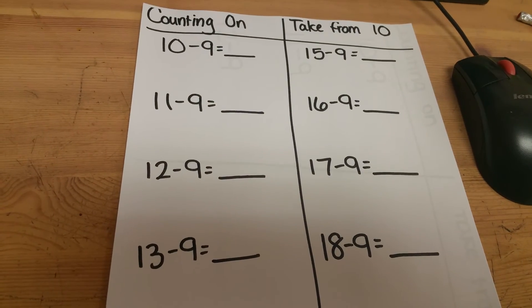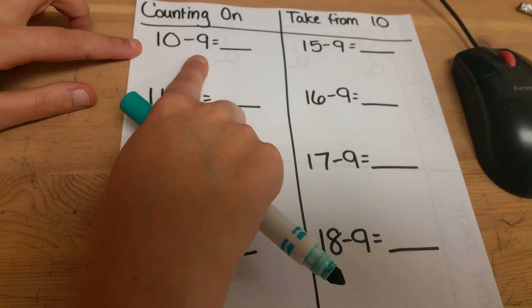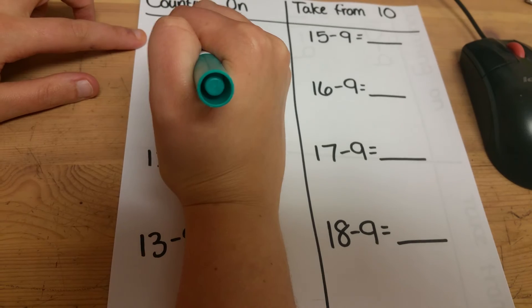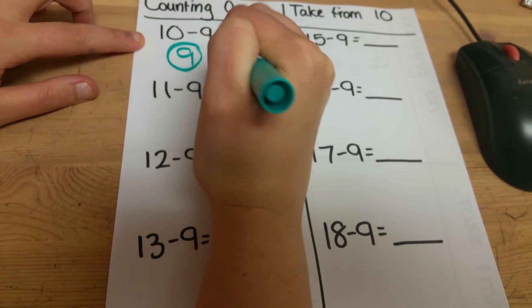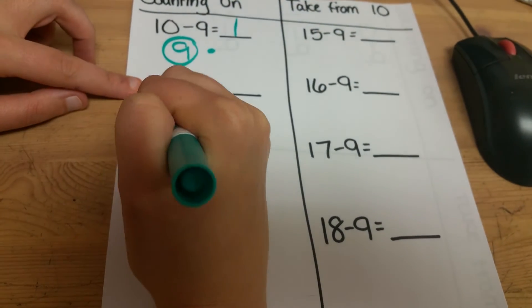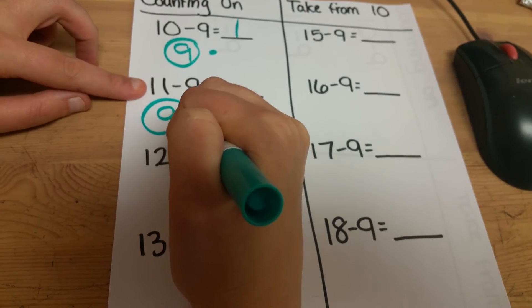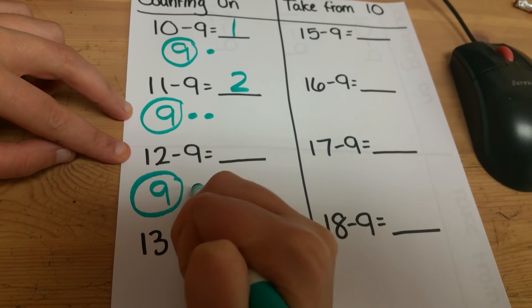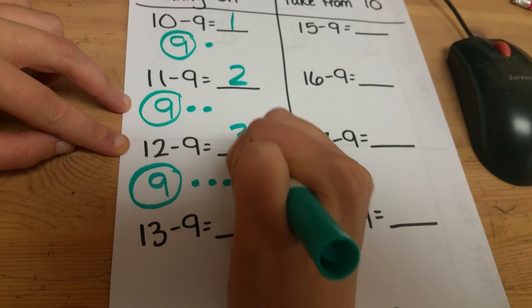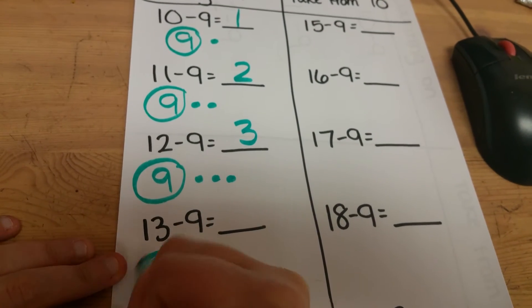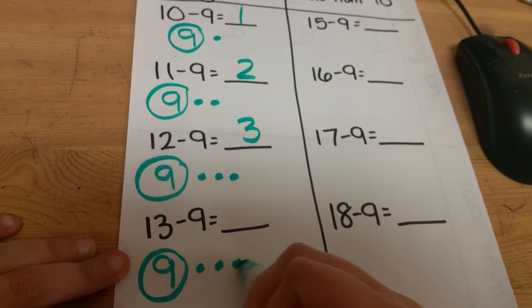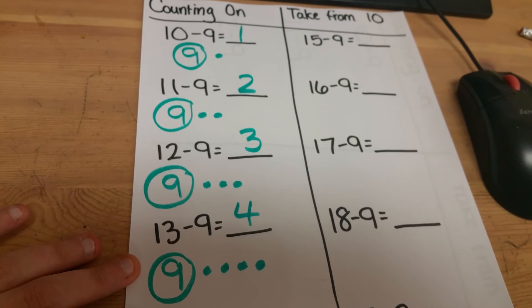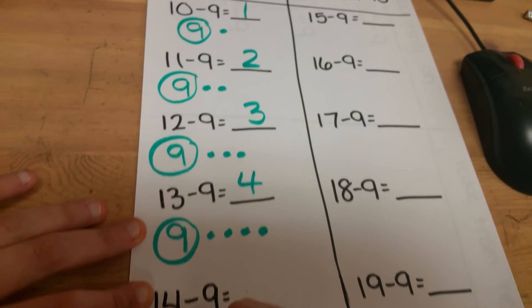Counting on is more efficient when the number is close to 9. Starting at 9, counting up 10. Starting at 9, counting up to 11: 10, 11. Starting at 9: 10, 11, 12. Starting at 9: 10, 11, 12, 13, 14.